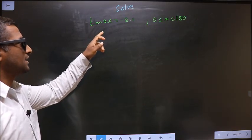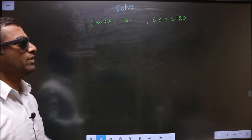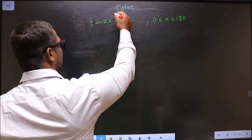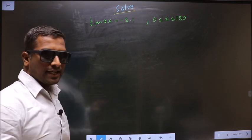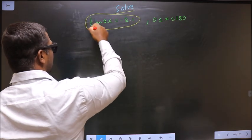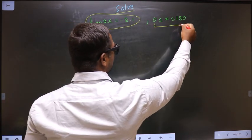Solve tan 2x equal to minus 2.1 where x lies in the interval 0 to 180. Here they told you to solve, so you should find the values for x satisfying this equation and also it should lie in the interval 0 to 180.